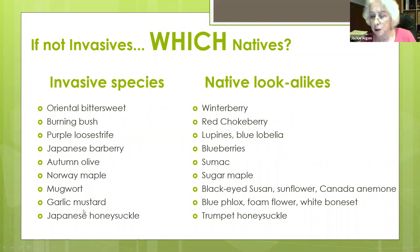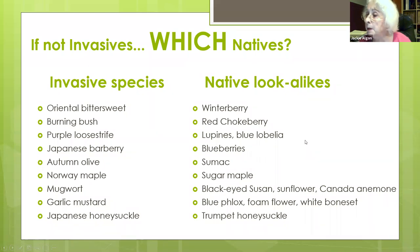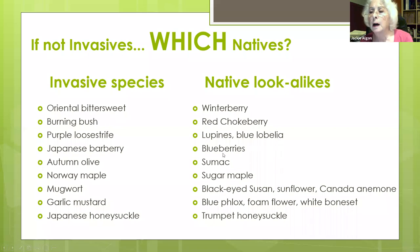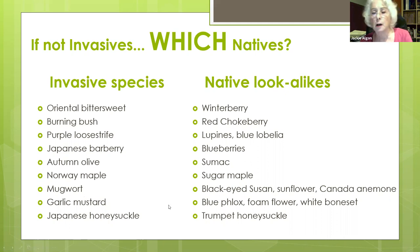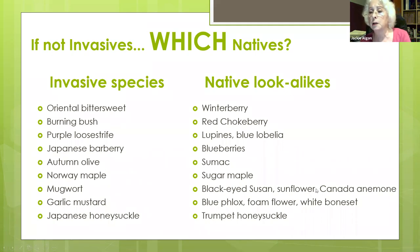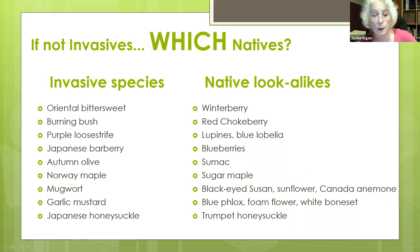If you're not going to have invasives, which natives would you want? Here's a quick list of replacements that look a lot like the invasives but are much better for the environment. Winterberry is part of the holly family — a deciduous holly. Red chokeberry turns red in late summer. Blueberries are a very good replacement for Japanese barberry and also provide sustenance to humans. There are also many native flowers you can plant — black-eyed Susans, coneflowers, phlox, boneset, trumpet honeysuckle (but not Japanese honeysuckle). Online resources can help you find more options for your garden.